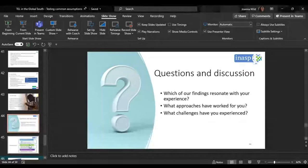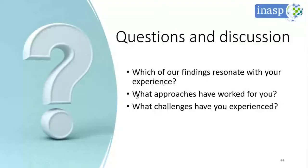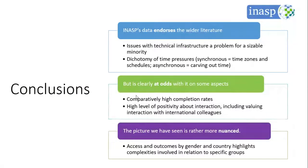We've only actually been able to present three of our six assumptions, but I'm going to share the slides anyway and hopefully we will be able to access them at a later stage to read about the findings from the other assumptions. So what are the conclusions? Overall, INASP data endorses the wider literature on some aspects. It's clear from the evidence we have collected that issues with technical infrastructure are a problem for a sizable minority, but perhaps this aspect will improve soon with new investments being made into infrastructure as a result of the COVID pandemic.